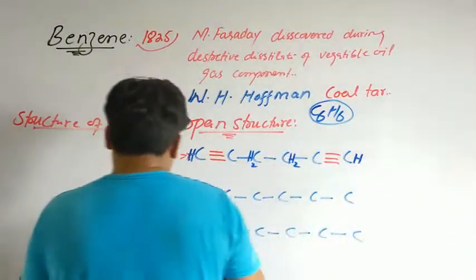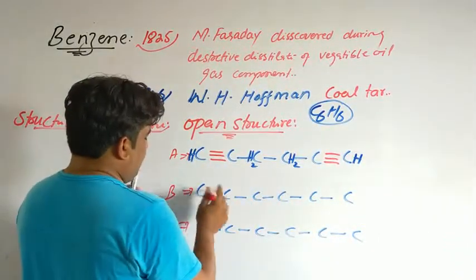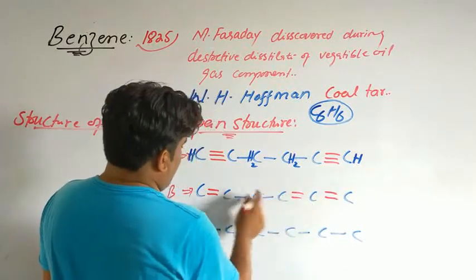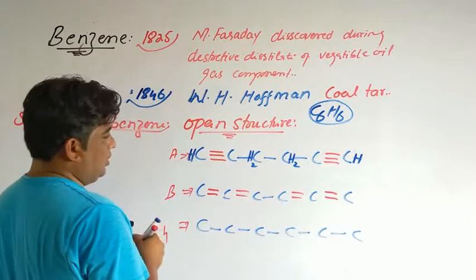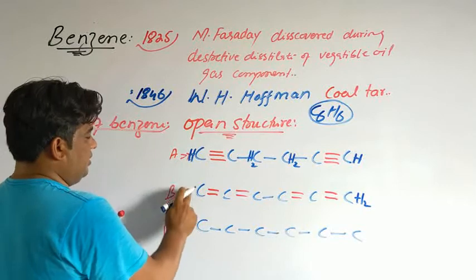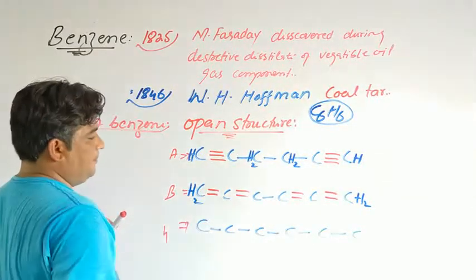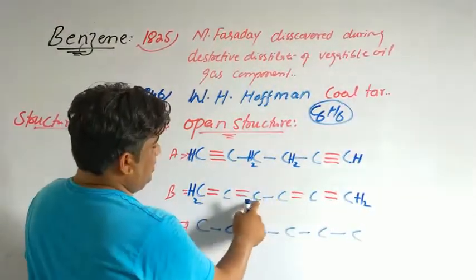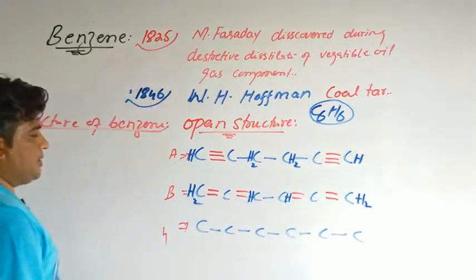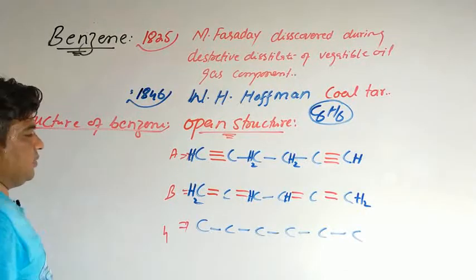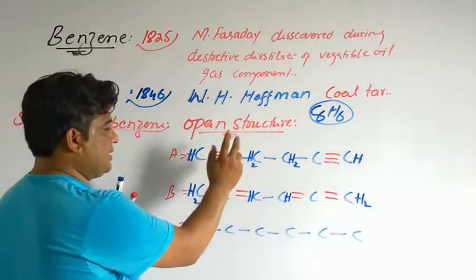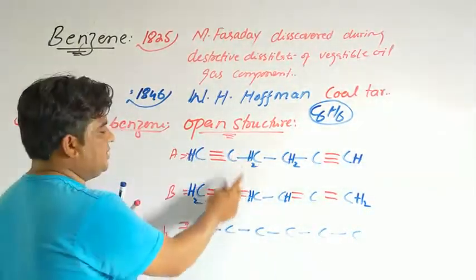The second open structure of benzene: if double bonds are placed here, here, and here as well, then 2H must be given at certain positions. Each carbon's valency of 4 is satisfied. You can verify that in this structure there are indeed 6 carbons and 6 hydrogens, and every carbon's valency is satisfied.